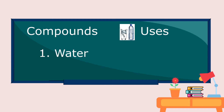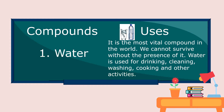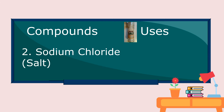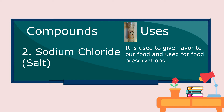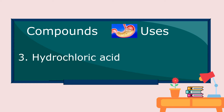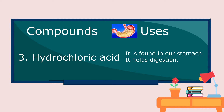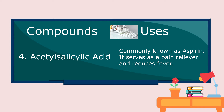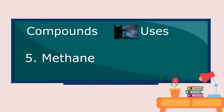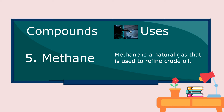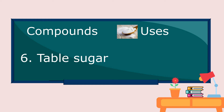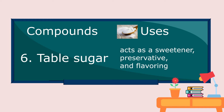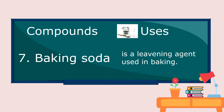Compounds and their uses: 1. Water - it is the most vital compound in the world. You cannot survive without the presence of it. Water is used for drinking, cleaning, washing, cooking, and other activities. 2. Aspirin (sodium acetylsalicylate) - commonly known as aspirin, it serves as a pain reliever and reduces fever. 3. Methane - a natural gas that is used to refine crude oil. 4. Table sugar - acts as a sweetener, preservative, and flavoring. 5. Baking soda - is a leavening agent used in baking.